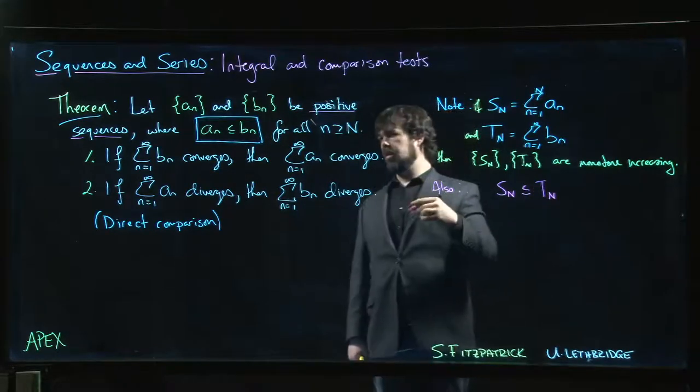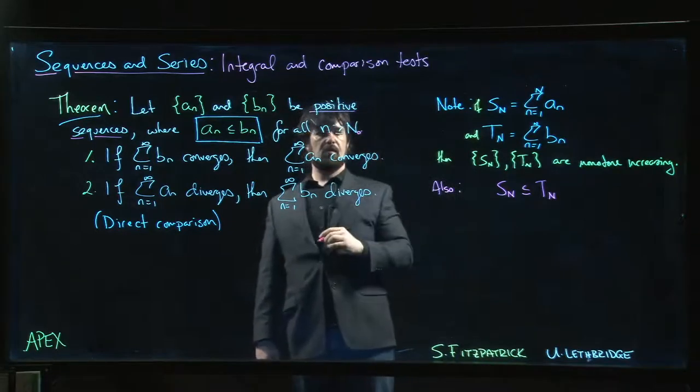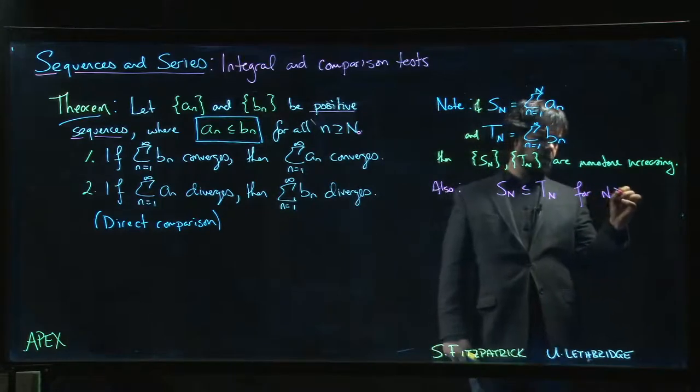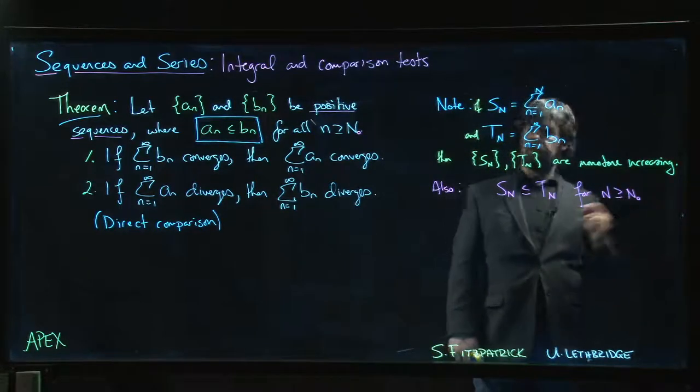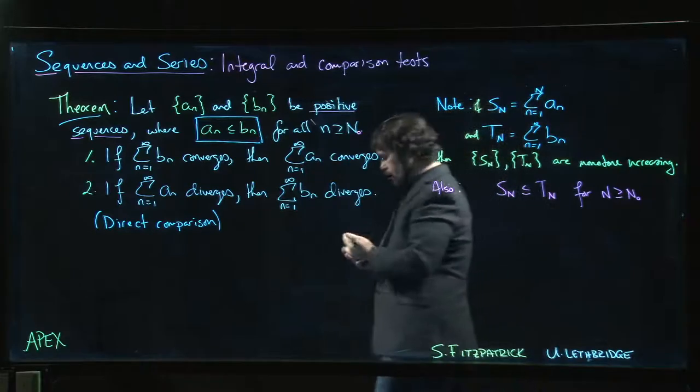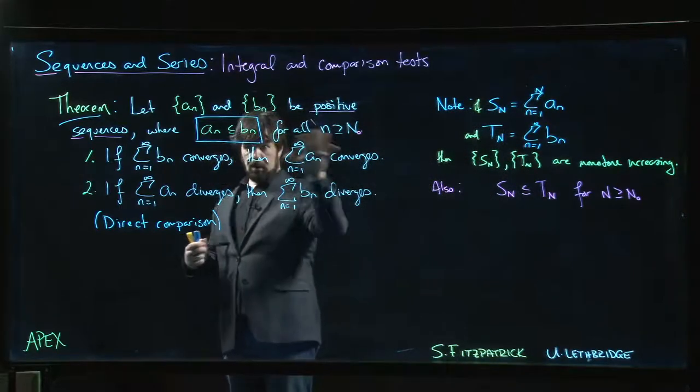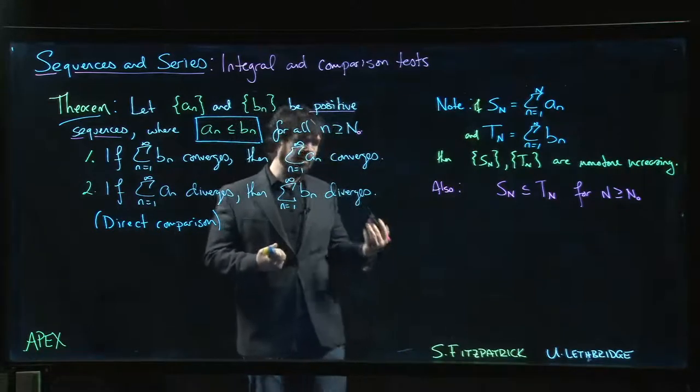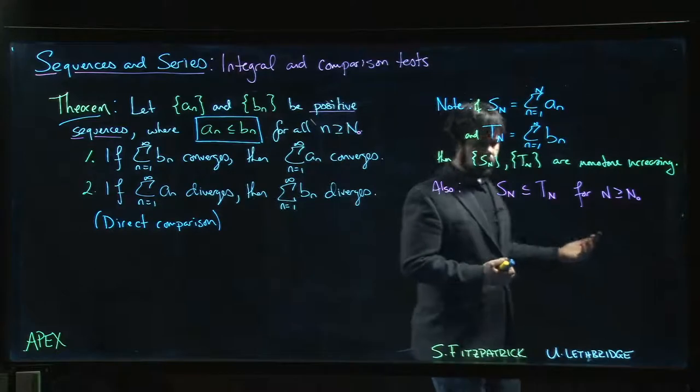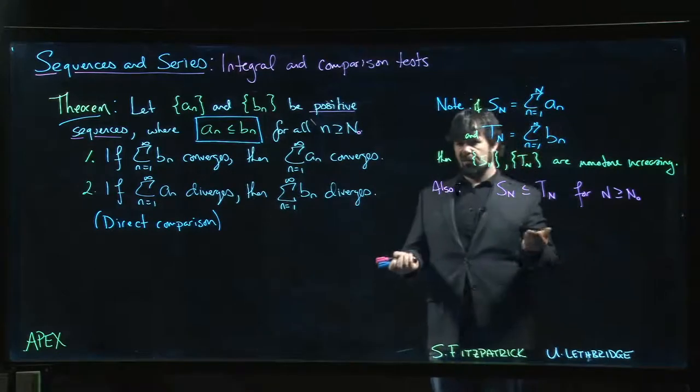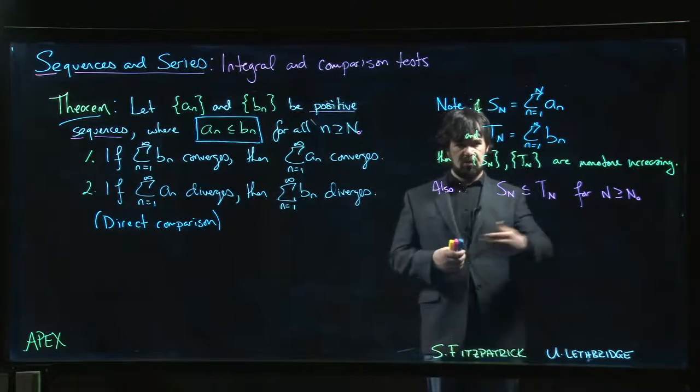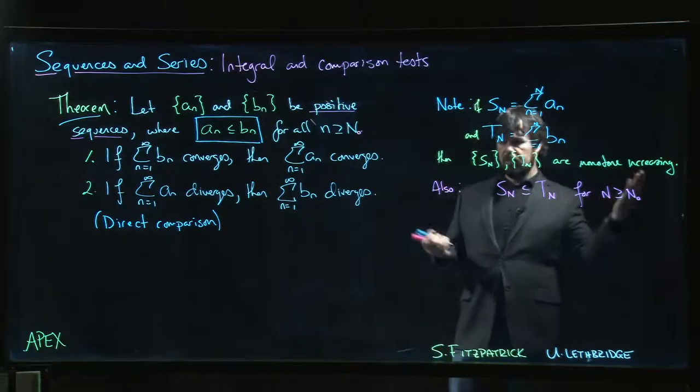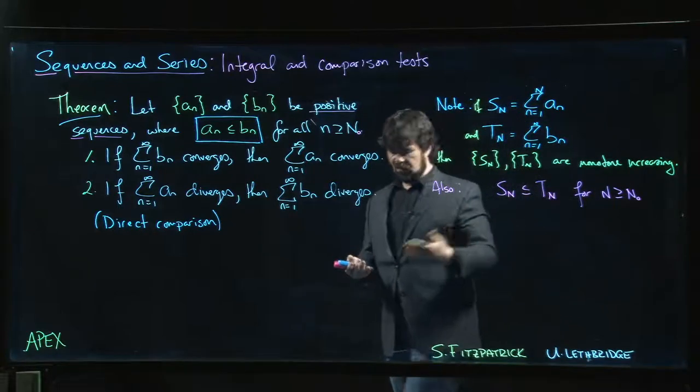Let's call that n_0 or something. For n bigger than or equal to this n_0, we always allow that maybe your comparison doesn't quite work at the beginning but it works eventually. When we're talking about convergence of series we always care about what happens eventually. The first few terms aren't that important. The first hundred terms, thousand terms, million terms aren't necessarily important. It's only what happens eventually that matters. So maybe this is a big number. Doesn't matter, as long as we have this eventually.